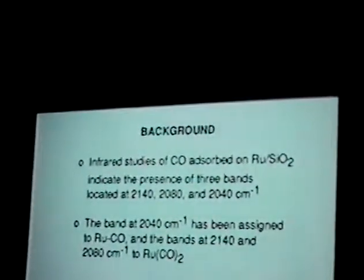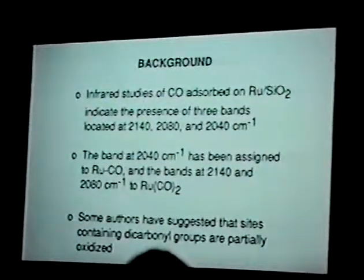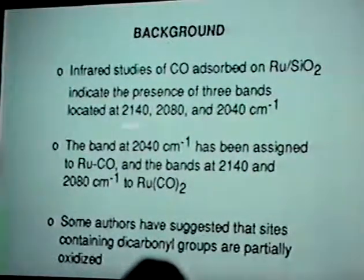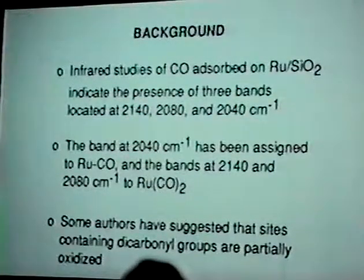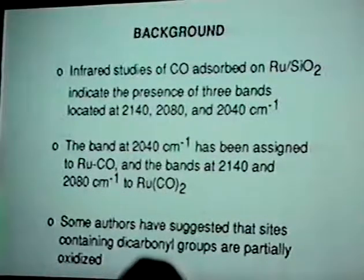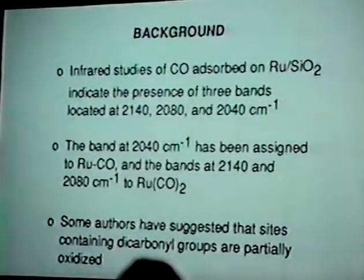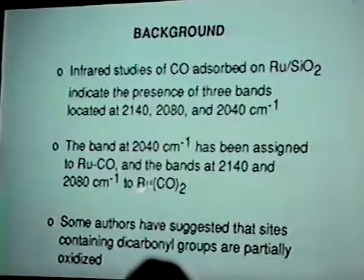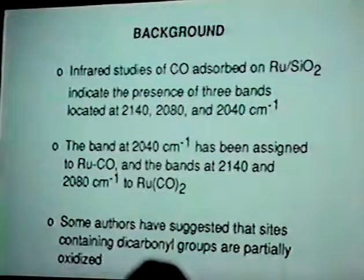By way of background, a number of studies have been done on the chemisorption of CO on rhodium supported on silica. What one finds is typically three bands with the band positions being at 2140, 2080, and 2040, give or take maybe five or six wavenumbers depending on who's reporting the numbers. The band at 2040 has routinely been assigned to a linear carbonyl, and the other two bands have been ascribed in the literature almost without exception to a ruthenium dicarbonyl. Where there has been controversy, it's been about the state of oxidation of the ruthenium, with some authors suggesting that the ruthenium holding the dicarbonyl is in an oxidized state, based on analogy with ruthenium chlorocarbonyls as stable compounds.